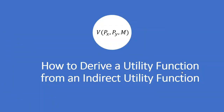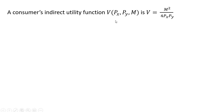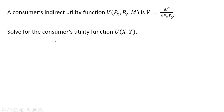In this video, we're going to learn how to derive a utility function from its indirect utility function. A consumer's indirect utility function, which is a function of the price of good x, price of good y, and money income, is given by the following. We want to solve for the consumer's utility function, where utility is a function of units of good x and units of good y.